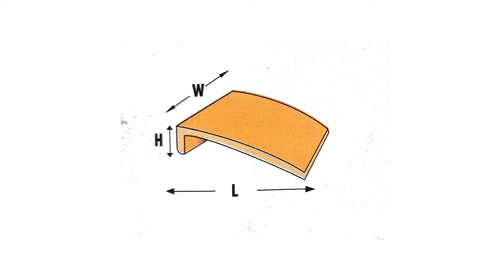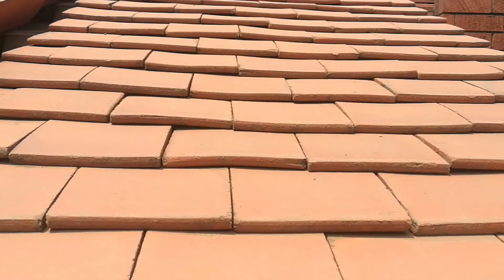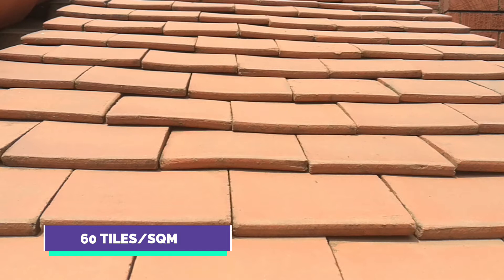The Brosley tile is best suitable for low pitched roofs. The dimensions are 260 millimeters in length, 150 millimeters in width, and 25 millimeters in height. A single Brosley tile weighs 1 kilogram, which is lighter than the other two designs. Because of the shorter dimensions, you'll need 60 pieces per square meter. A single Brosley tile costs 16 shillings.